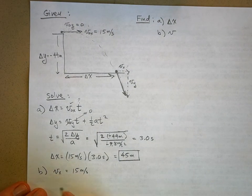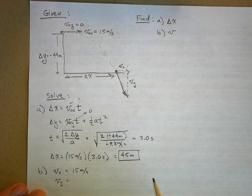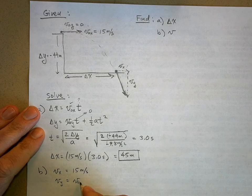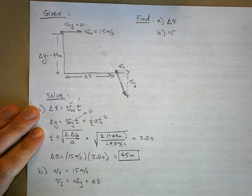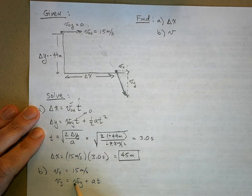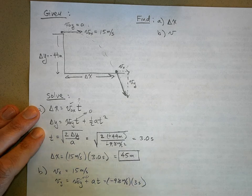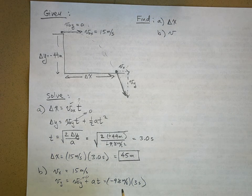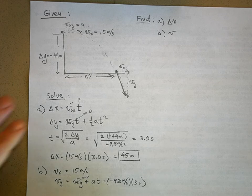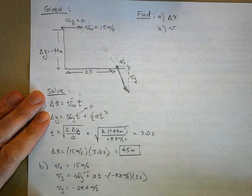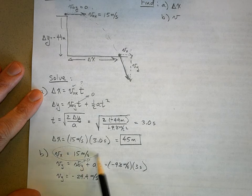Now what's the final velocity in the y direction? There are several ways to do this. The easiest is the first kinematic equation: Vy equals V-naught-Y plus A times T. V-naught-Y is zero, so Vy equals negative 9.8 meters per second squared times 3 seconds, which gives Vy equals negative 29.4 meters per second.